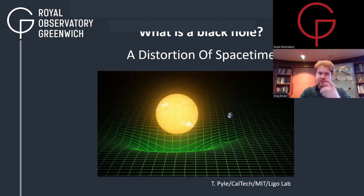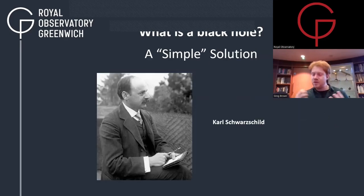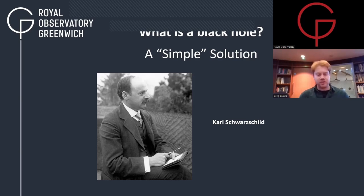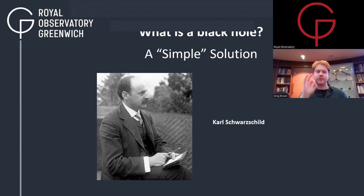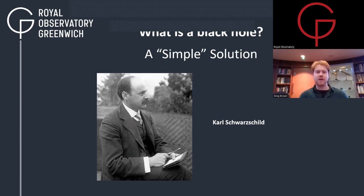A gentleman named Carl Schwarzschild came up with the solution. He was working on the simplest possible version: he imagined the entirety of the universe was empty with only one object in it, a single tiny point of mass. He passed that information through all of Einstein's equations to come up with his understanding of the way gravity works.